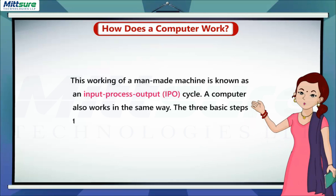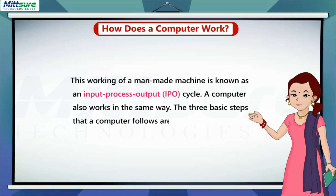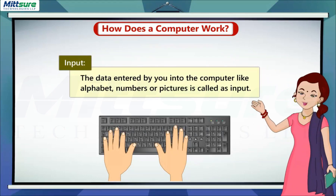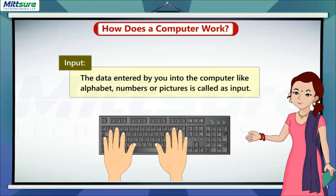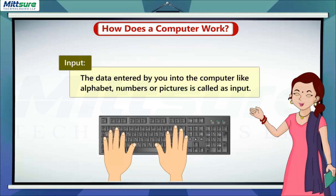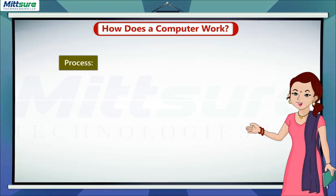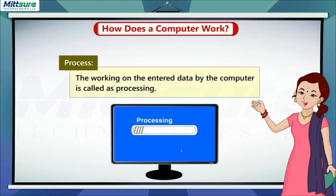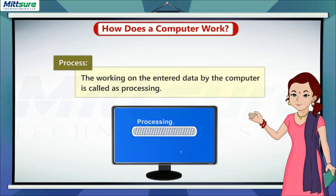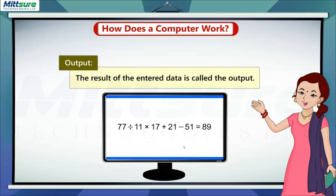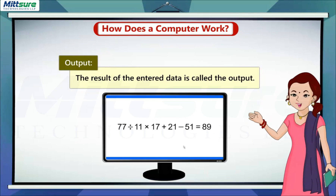The three basic steps that a computer follows are: Input — the data entered by you into the computer, like alphabet, numbers, or pictures, is called input. Process — the working on the entered data by the computer is called processing. Output — the result of the entered data is called output.